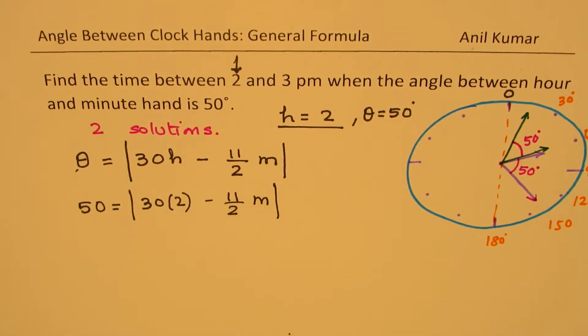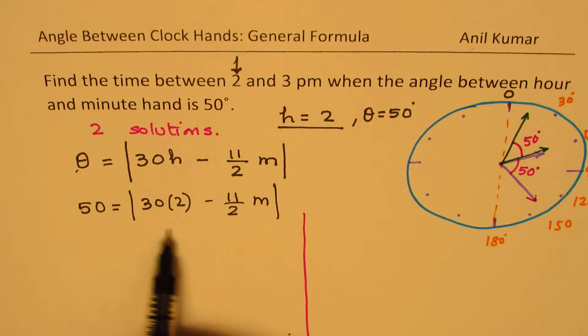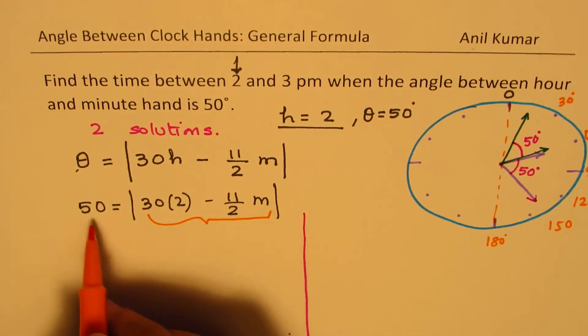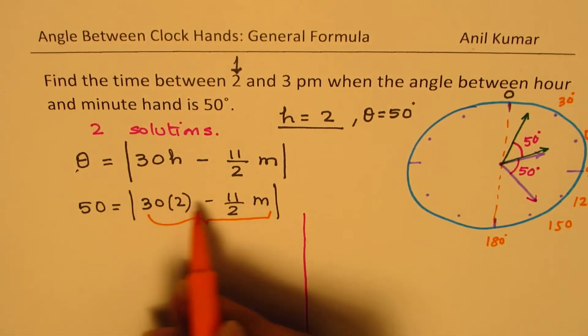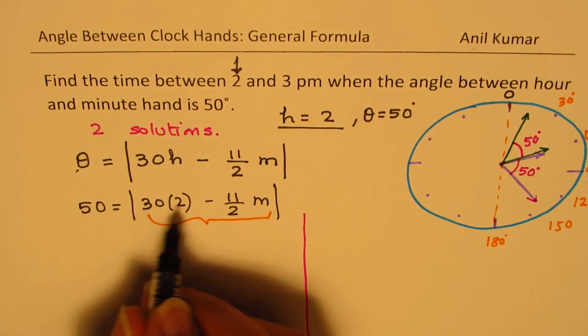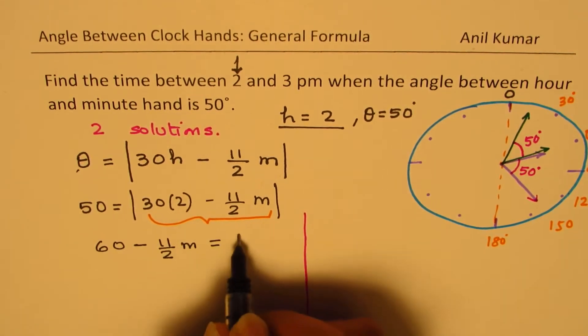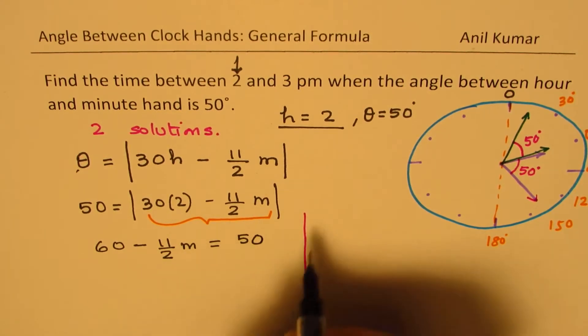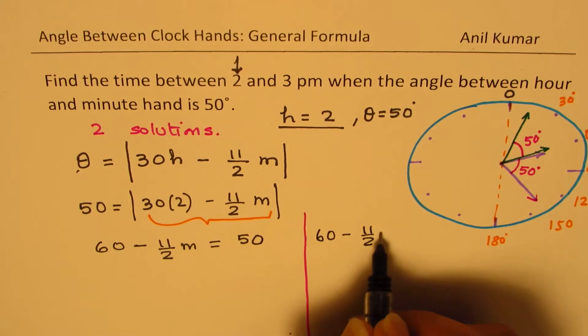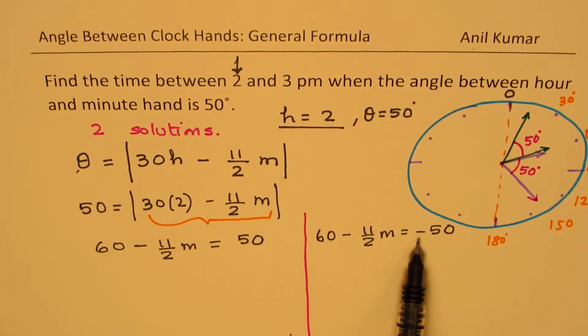Absolute value basically means that we could solve for two equations. All this inside could be either positive 50 or negative 50, but absolute value will be positive. You get the idea, right? So we could write this as 30 times 2 is 60 minus 11 by 2 M equals to positive 50, or this could also be 60 minus 11 by 2 M equals to minus 50. Clear? Because absolute value of minus 50 is also 50. You get the idea? Let's solve.